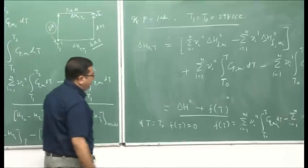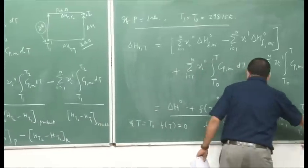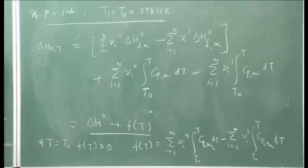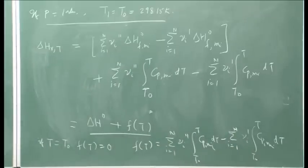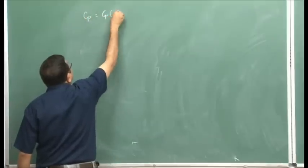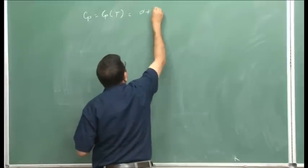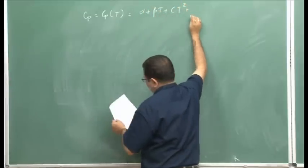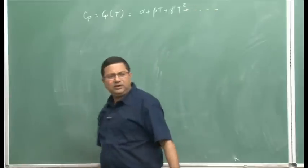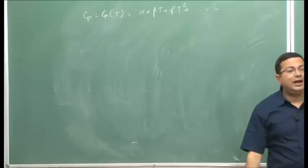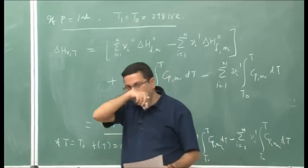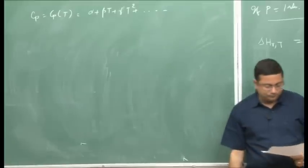C_p is the specific heat at constant pressure, and these values for different species or chemicals are given in thermochemical tables. C_p can be given as a polynomial function of temperature, typically expressed as: C_p = α + βT + γT² + etc. Depending on the accuracy required, we can choose the order. These values of α, β, γ are given in standard thermochemical tables. This is how we estimate the heat of reaction.